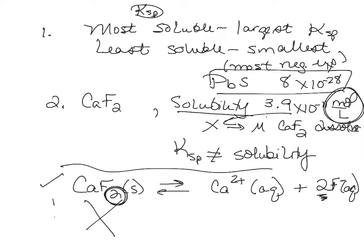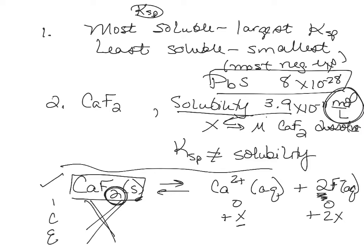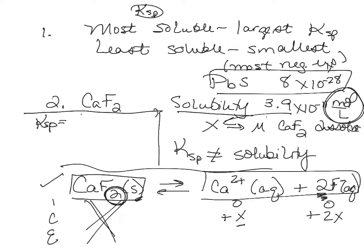When doing an ICE table, the insoluble salt is a solid and does not affect equilibrium — put a big X through it. Products are zero to begin with. For every X of calcium that forms, you get 2X of fluoride. To calculate KSP, it's the concentration of calcium ion times the concentration of fluoride ion squared.